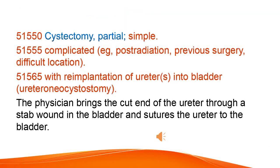Cystectomy, partial, simple or complicated — for example, post-radiation, previous surgery, or difficult location. With reimplantation of ureter(s) into bladder, ureteroneocystostomy: the physician brings the cut end of the ureter through a stab wound in the bladder and sutures the ureter to the bladder.